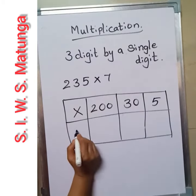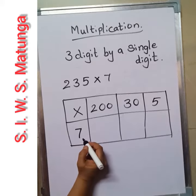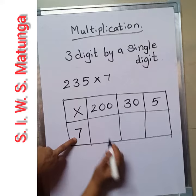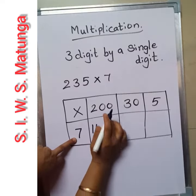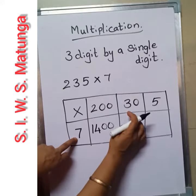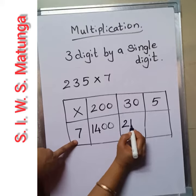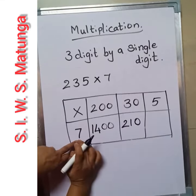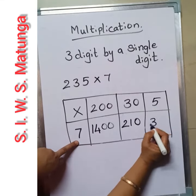Now this expanded number will come here. Let us do the multiplication. Multiply from this number to this number. 7 twos are 14 — write that and put the 2 zeros in front, giving 1400. Now go to the next number: 7 threes are 21, and here there is 1 zero, so put that zero, giving 210. Now the third: 7 and 5 — 7 fives are 35.